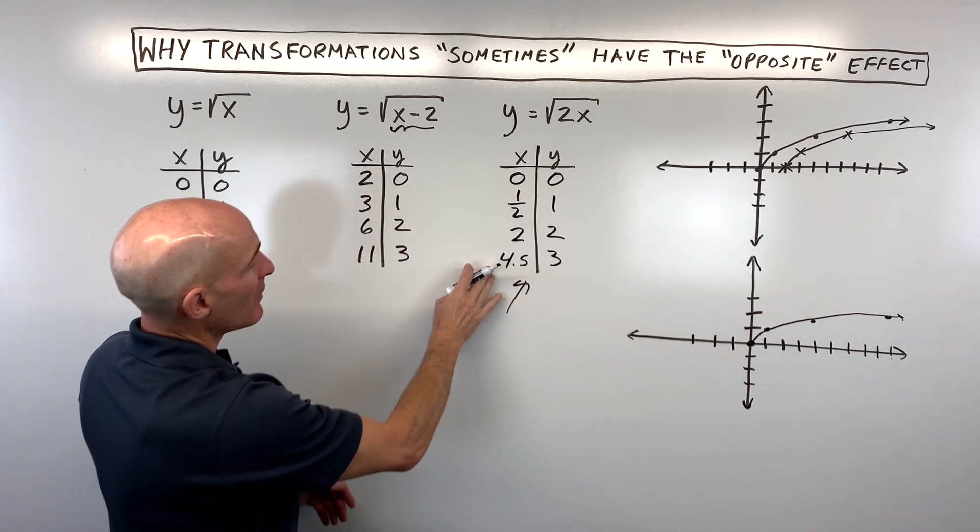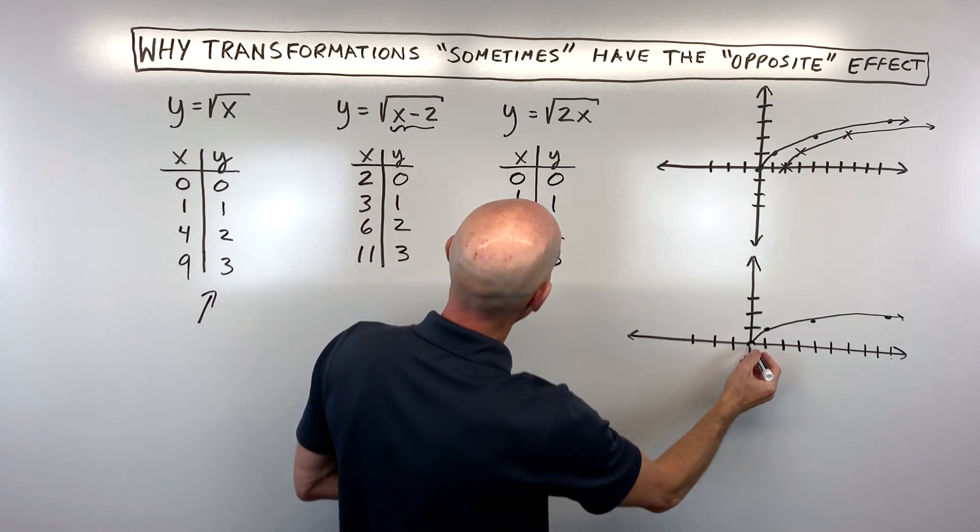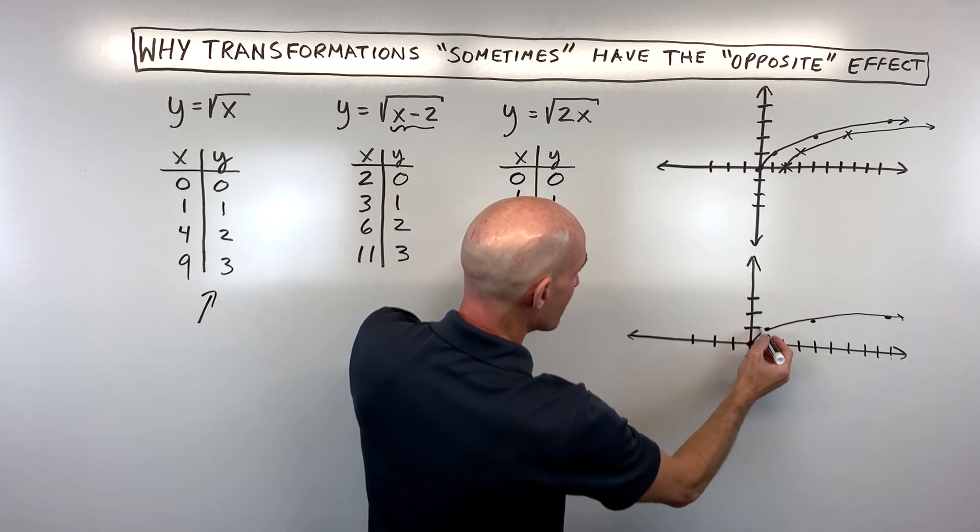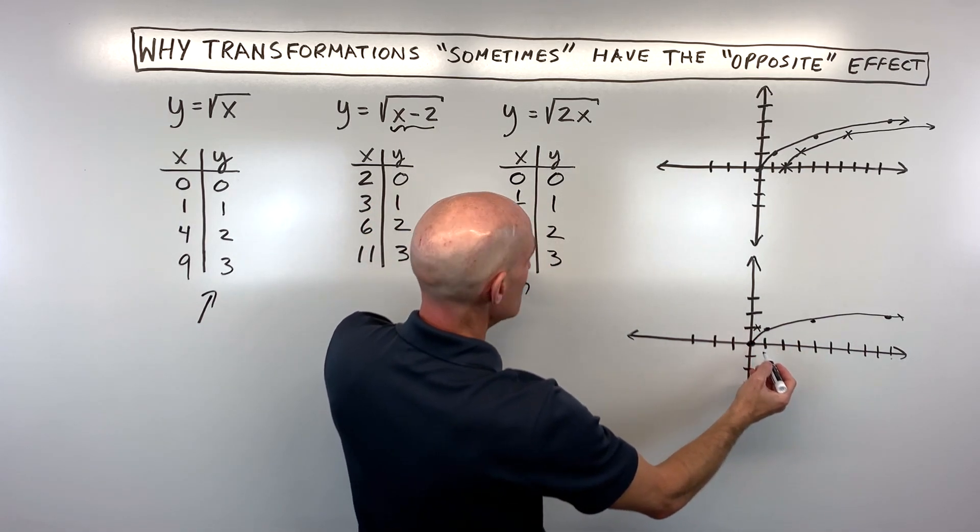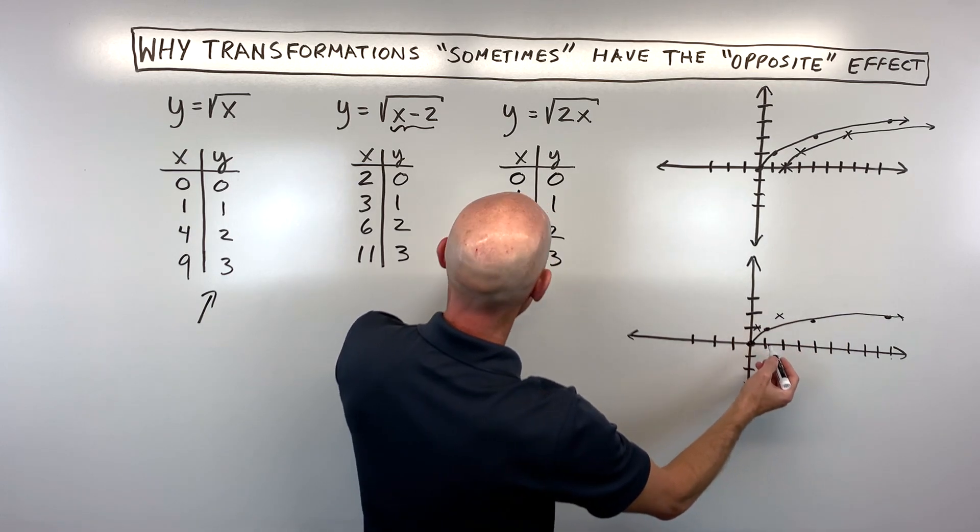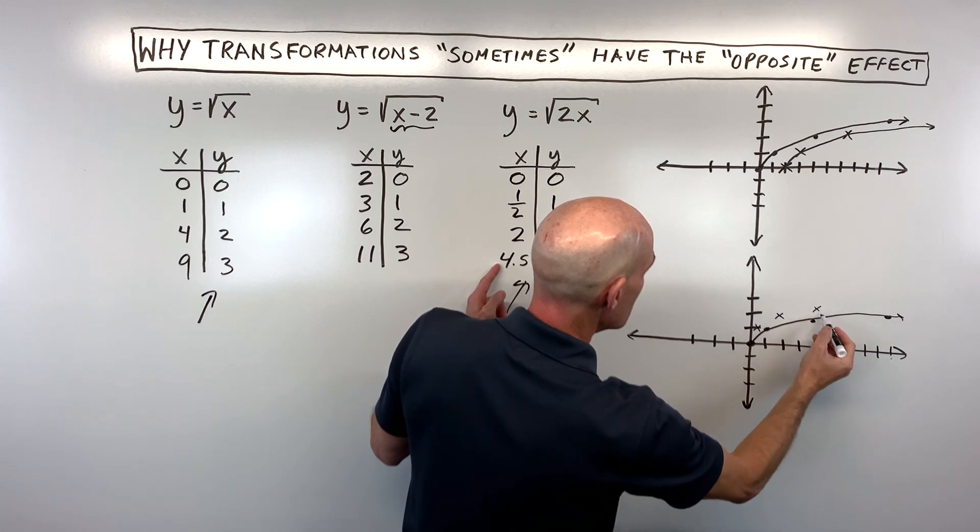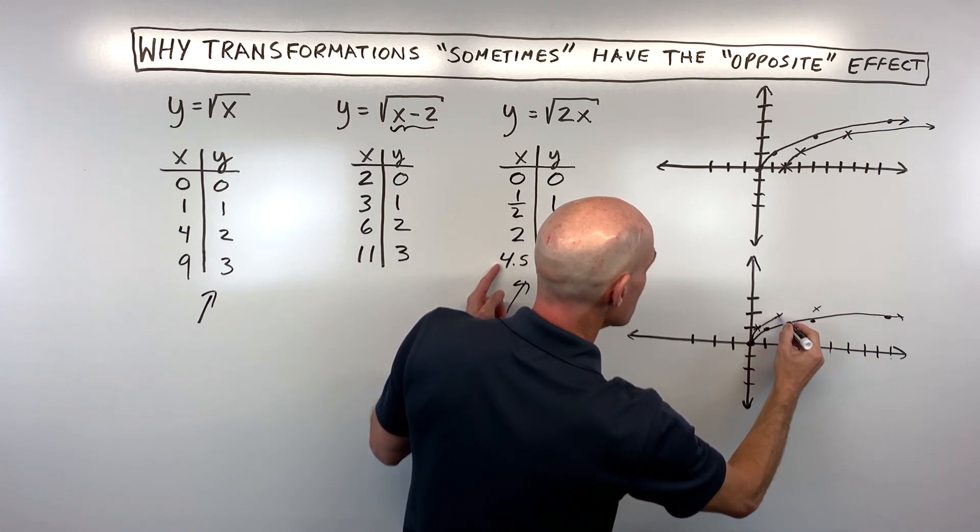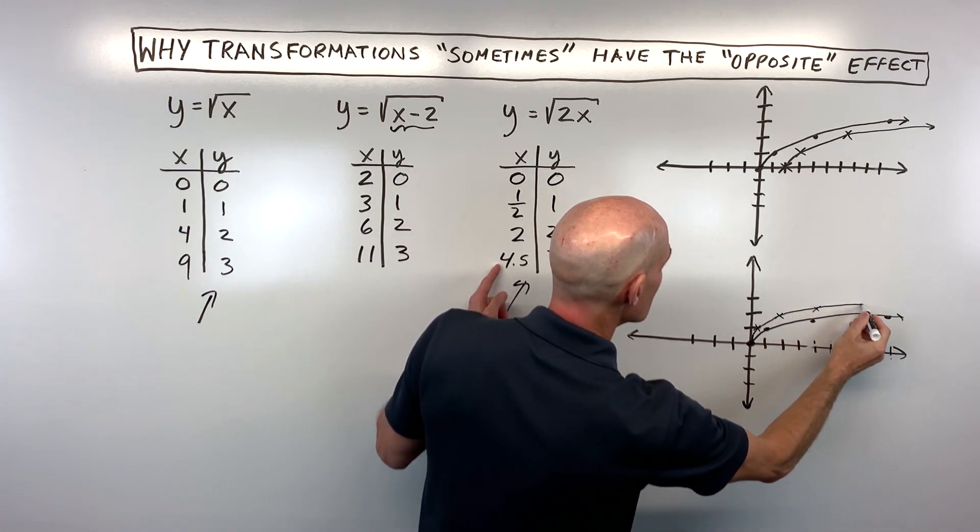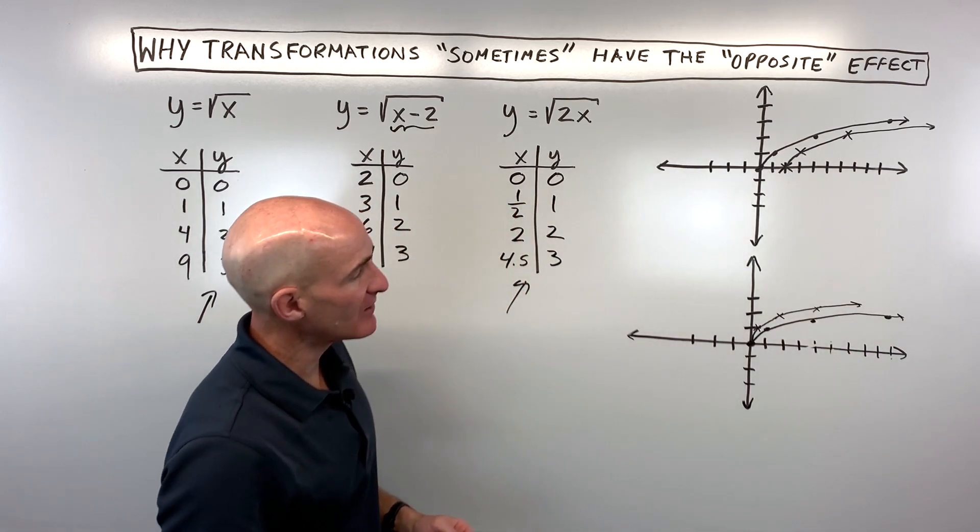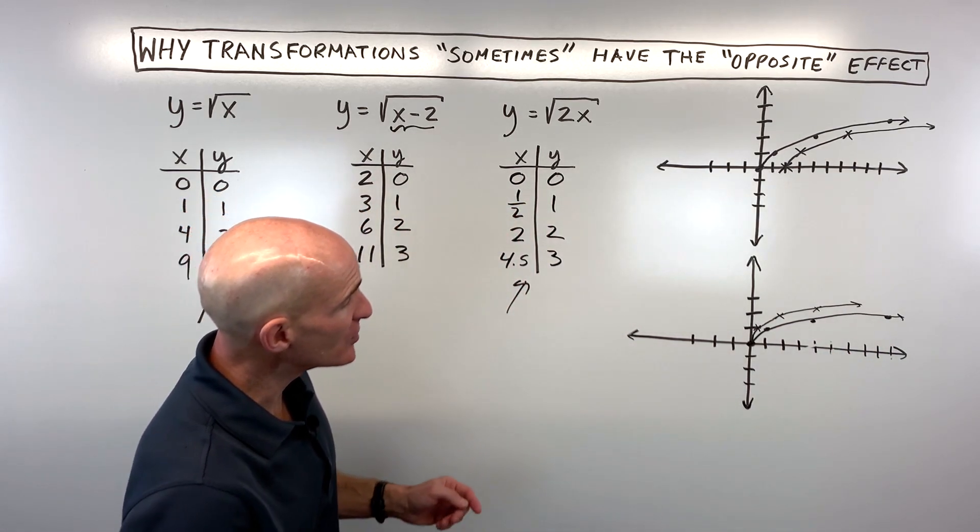If I plot these points, we've got (0, 0) at the origin, (1/2, 1) is right here, (2, 2) is right here, and (4.5, 3) is right here. So this graph looks something like this. Now what's happening in this case?